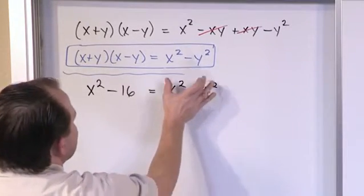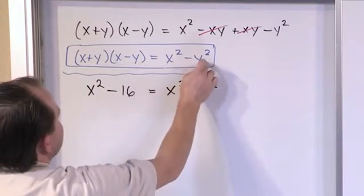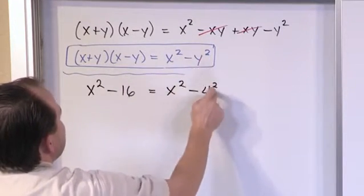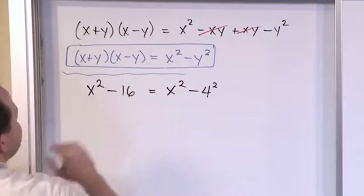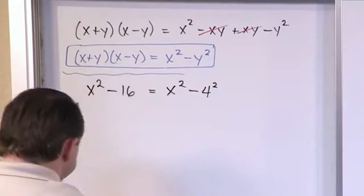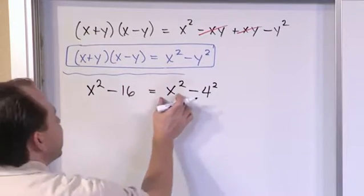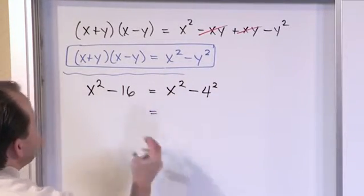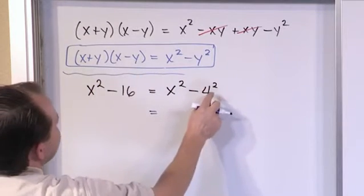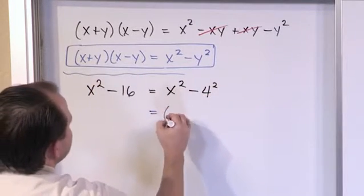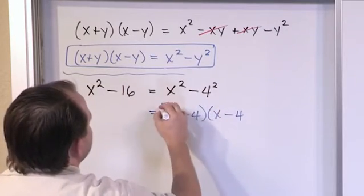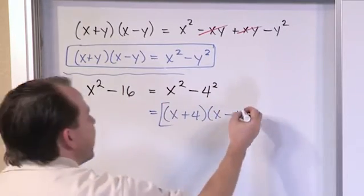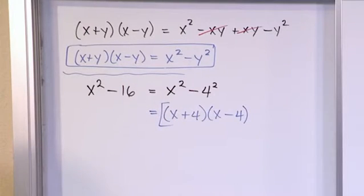Now doesn't this look an awful lot like what I have here? x squared minus y squared minus 4 squared. So really what we've said is we've replaced the y with 4, but other than that, this is the same exact thing to what I've written up above. So because it's the difference of two perfect squares, you can write the answer immediately, x plus y, x minus y. It's just that y is 4 now. So you say x plus 4, x minus 4. And that is the final answer. That is the factored form of this. And if you don't believe me, you should always be skeptical in life.